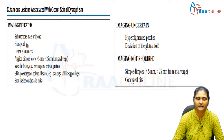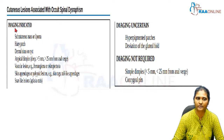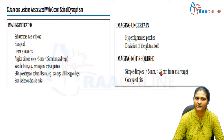MRI is indicated if there is a subcutaneous mass or lipoma, hairy patch in the L5-S1 region, dermal sinus or cyst, or an atypical dimple — defined as deeper than 5 mm or more than 25 mm from the anal verge — or vascular lesions like hemangioma or telangiectasia, skin appendages like a skin tag or tail-like appendages, and any scar-like lesions. Imaging is not required for a coccygeal pit or a simple dimple less than 5 mm or less than 25 mm from the anal verge.